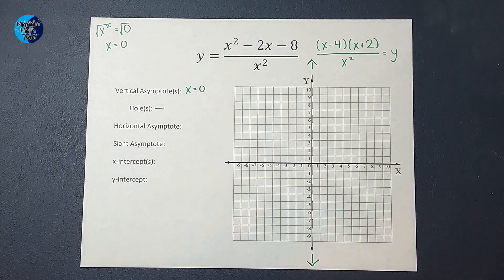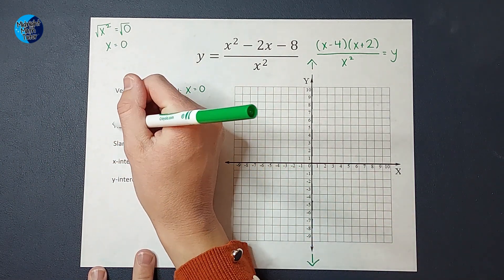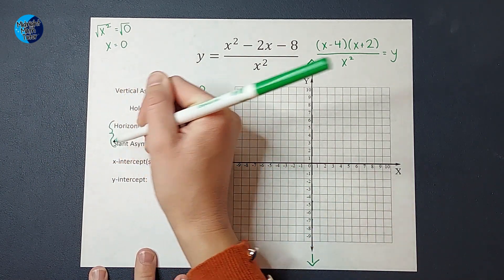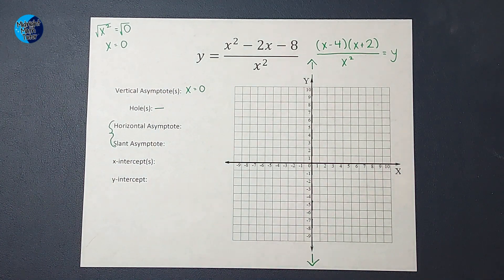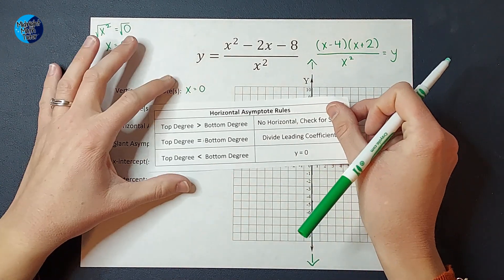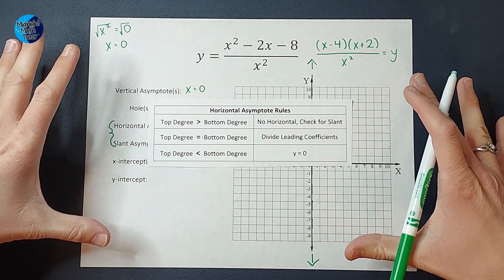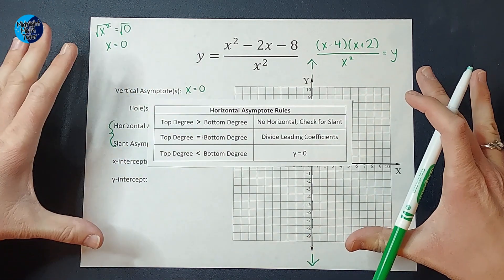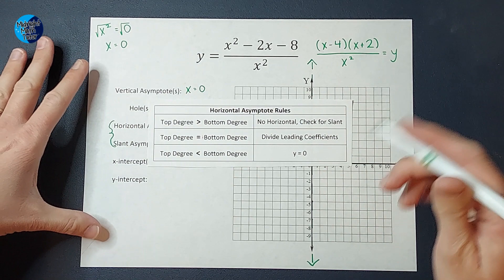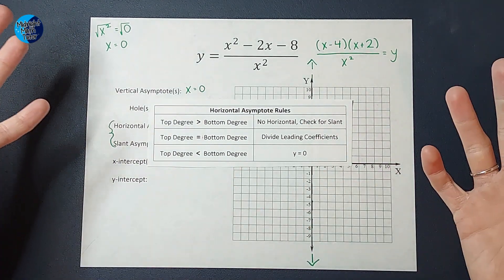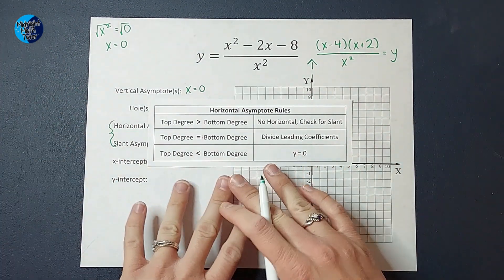All right. The next thing we're going to do is our horizontal or slant asymptote. You won't have both. To figure out what our horizontal or slant asymptote is, we follow some rules. Yes, everyone loves rules in math. Now this wasn't just made up by some person. This has a reason why these rules work. And I'll link a video in the corner if you want to see an explanation of these rules.